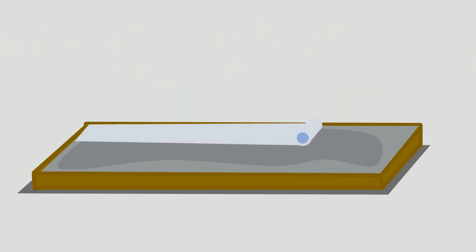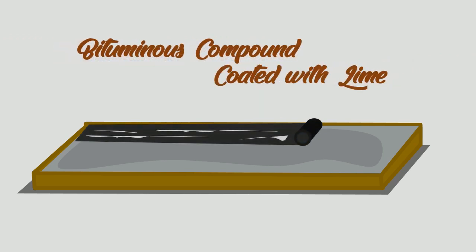Thus, other modified materials which are not black in color came in use. However, bituminous compound coated with lime is being used as lime wash prevents heat absorption.